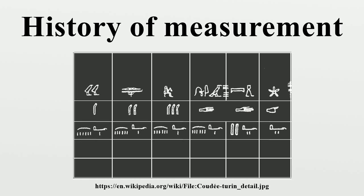The earliest known uniform systems of weights and measures seem all to have been created at some time in the 4th and 3rd millennia BC, among the ancient peoples of Egypt, Mesopotamia, and the Indus Valley, and perhaps also Elam as well.